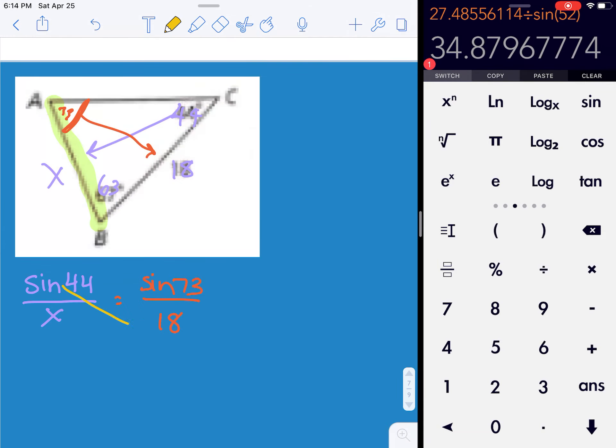Now that I've got all my numbers filled in, I just need to cross multiply and divide. So I have the sine of 44 times 18 divided by the sine of 73. And I get 13.1.